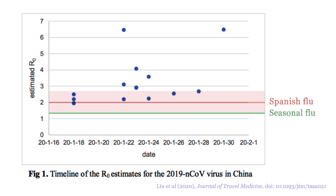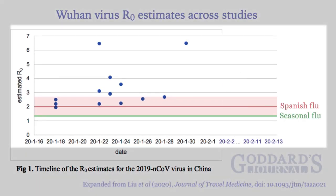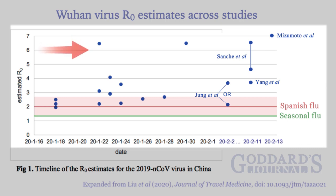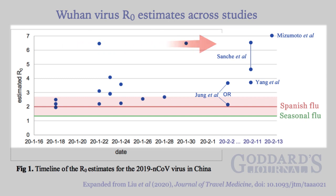Expanding the publication timeline to add estimated R-values from four additional studies released after the review was published, most of the estimated reproductive values for the Wuhan virus are greater than the mean reproductive value of the Spanish flu, with many estimates much higher than the Spanish flu's reproductive range. Moreover, as the available data have increased over time, the estimates have trended upwards — not suggesting the real R-value is increasing, but that as data accumulate, estimates tend to become more accurate.